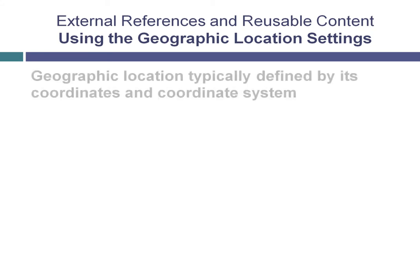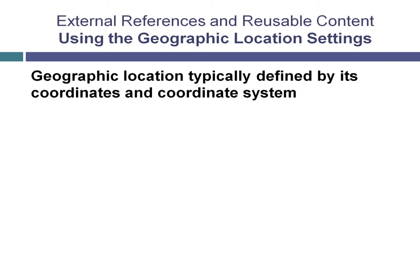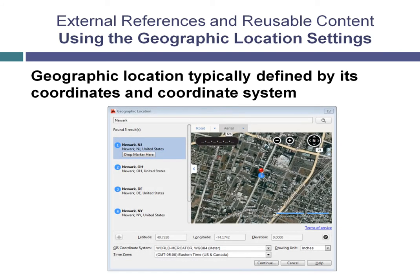Typically, a geographic location is defined by its coordinates — for example, latitude, longitude, and elevation — and the coordinate system, for example World Mercator WGS84, used to define the coordinates. Because the coordinates of a location can differ from one GIS coordinate system to another, when you specify the geographic location of the geographic marker, the program also captures the details of the geographic information system, or GIS, coordinate system.